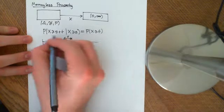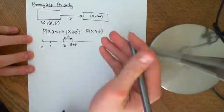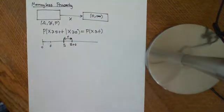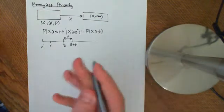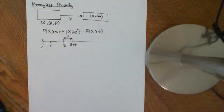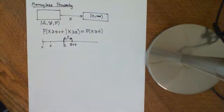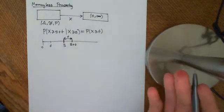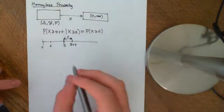Basically, the experiment doesn't change. If you wait s minutes, it's just as though you begin the experiment again. That's what is meant by the memoryless property — it doesn't remember how long you've been doing the experiment so far. If you have been doing the experiment s minutes, the chance that the phone call will come in the next t minutes is the same as if you were back at the beginning.